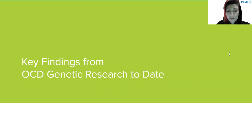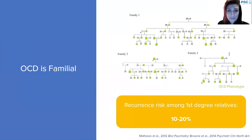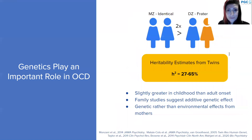Now we're going to go over some key themes from OCD genetic research to date. First, OCD is familial, as illustrated in pedigrees showing clustering within families and across generations. The recurrence risk among first-degree relatives has some estimates as high as 50%, but a lot seem to cluster within the 10 to 20% range, which is considerable given the prevalence of OCD in the general population.